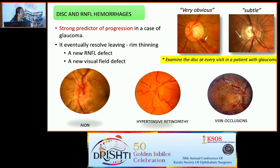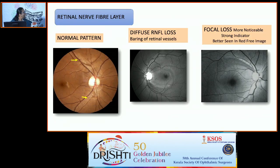Disc and RNFL hemorrhages are a strong predictor of glaucoma progression. They eventually resolve, leaving rim thinning, a new RNFL defect, and a new visual field defect — sometimes obvious, sometimes subtle — so disc examination on follow-up is important. Other conditions with disc hemorrhages include AION, hypertensive retinopathy, and vein occlusions. For the retinal nerve fiber layer, you can see normal striations; diffuse RNFL loss shows the vessels on a bare bed, best seen with a red-free filter, and focal loss appears as a wedge defect.